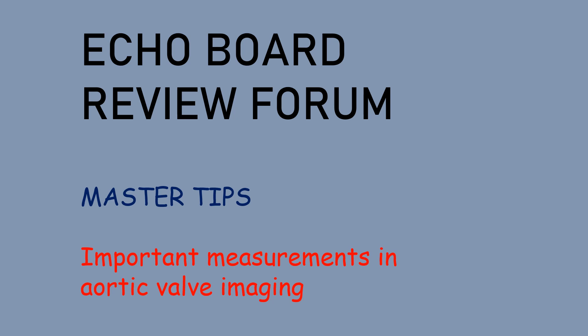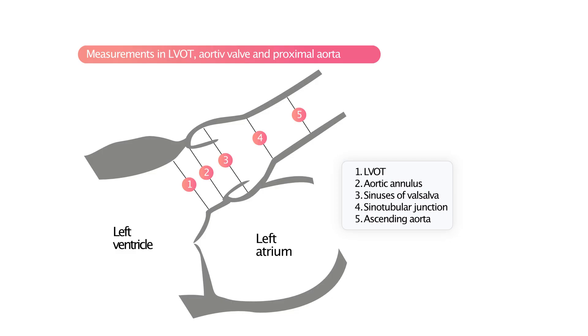Welcome to the EchoBoard master tips. The topic for this edition is important measurements in aortic valve imaging. The important measurements are: annulus, aortic LVOT diameter, sinus of Valsalva, sinotubular junction, and the ascending aorta.